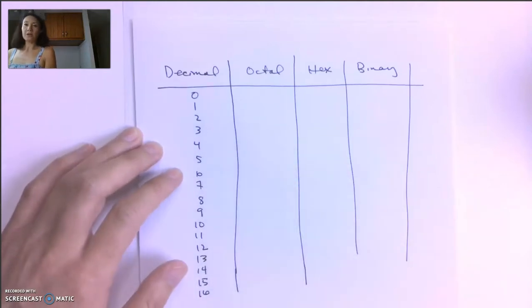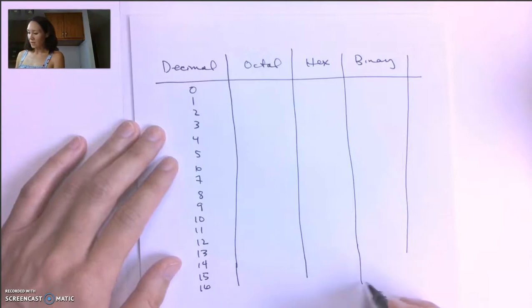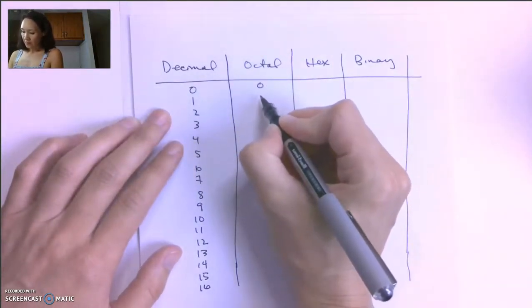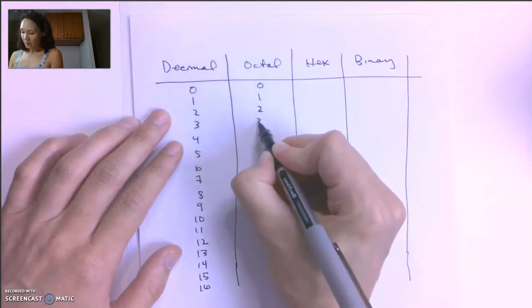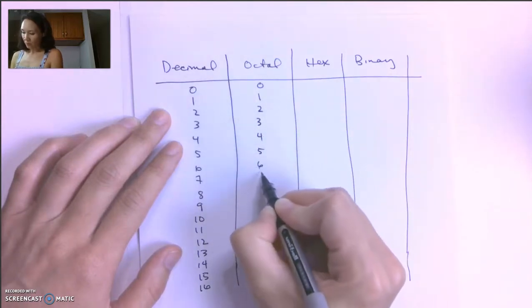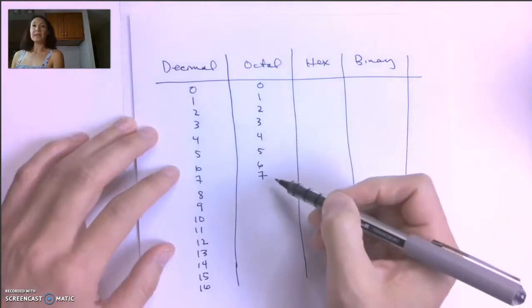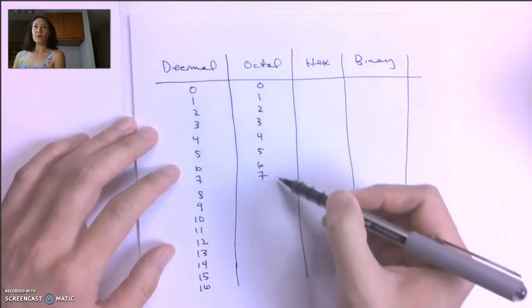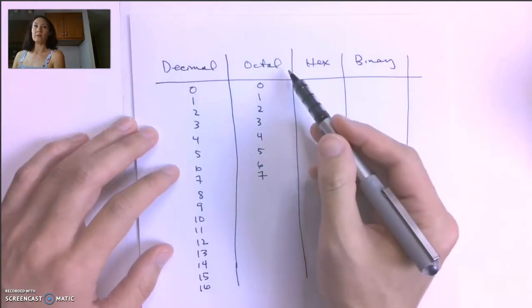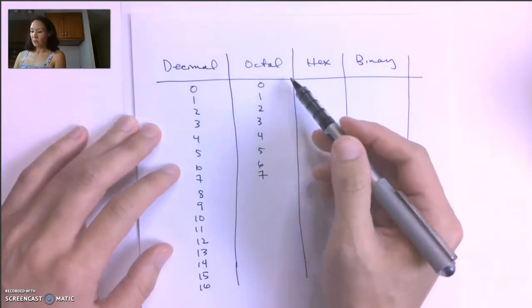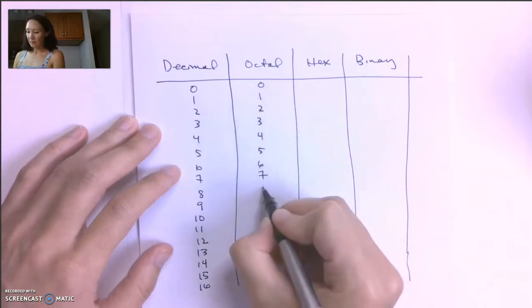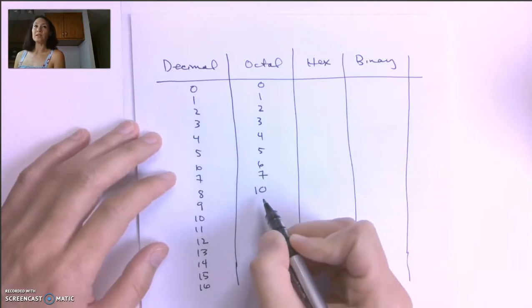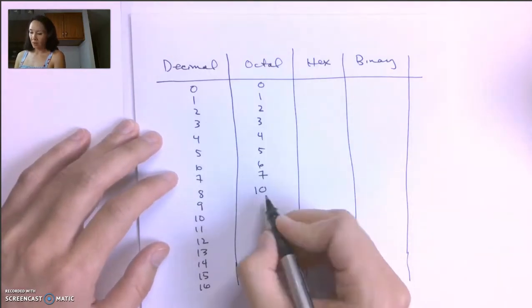Now in octal, since this is base 8, we only have 8 unique numerals. So from 0 to 7, this looks just like decimal because we have the same numerals. So now once we get to 7, right, since we have 0, we have 8 unique numerals. We're out of numerals in an octal number system. So what do we do? Just like we did before, we have to start over at 0, but we put a 1 in front of it. So 1, 0 that looks like 10 to us in decimal is actually 8 in octal.